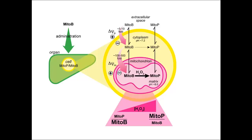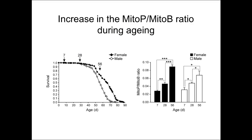One example where we use this is shown in the next slide. We injected MitoB into fruit flies at different ages: young (7-day-old), middle-aged (28 days old), or old (56-day-old) flies. As you can see from the survival curve on the left, after 50 to 60 days they start to die off — this is their normal lifespan. We wanted to see whether there was an increase in mitochondrial ROS production in these flies as they get old, because the mitochondrial oxidative stress theory of aging implies there should be an increase in oxidative stress with age.